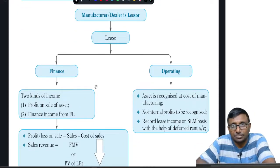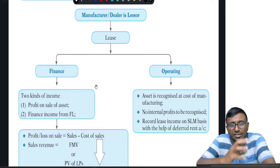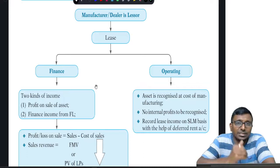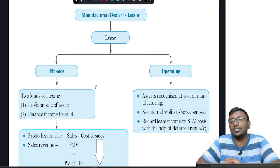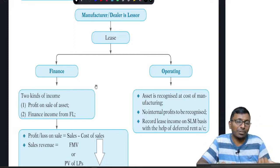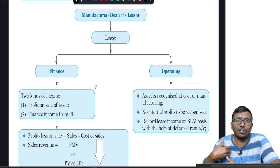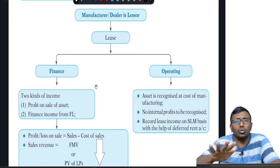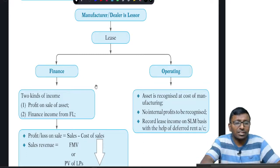Next: manufacturer or dealer as lessor. If the lessor is himself a manufacturer or dealer — for example, a car manufacturer who both sells cars for cash and gives them on lease — the lease can be either an operating lease or a finance lease. If it is an operating lease, the car remains in the manufacturer's books. Control is with the manufacturer, and lease receipts are recognized on a straight-line basis. Nothing new here.